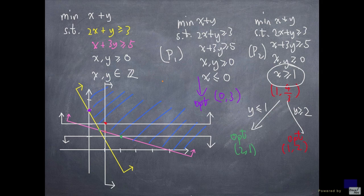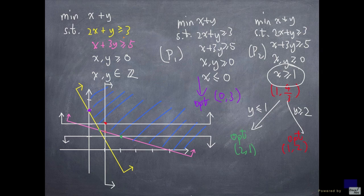In our case, we first look at the x value of our optimal solution for the linear programming relaxation. And we use that value to come up with the two constraints, x at most 0 and x greater than 1. And we got two problems. P1 has an optimal solution at 0 comma 3, which is integer, so there's no need to explore further.